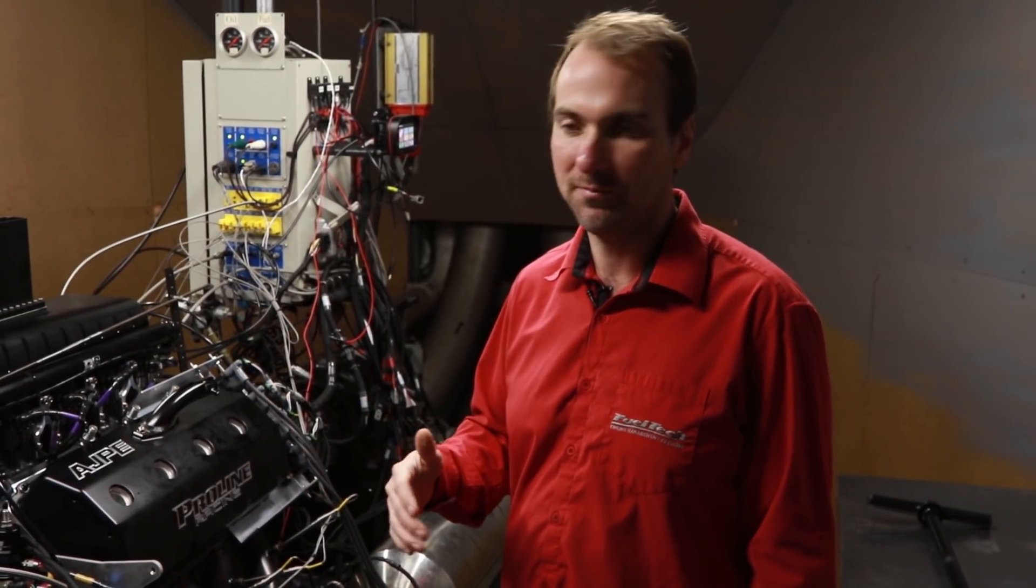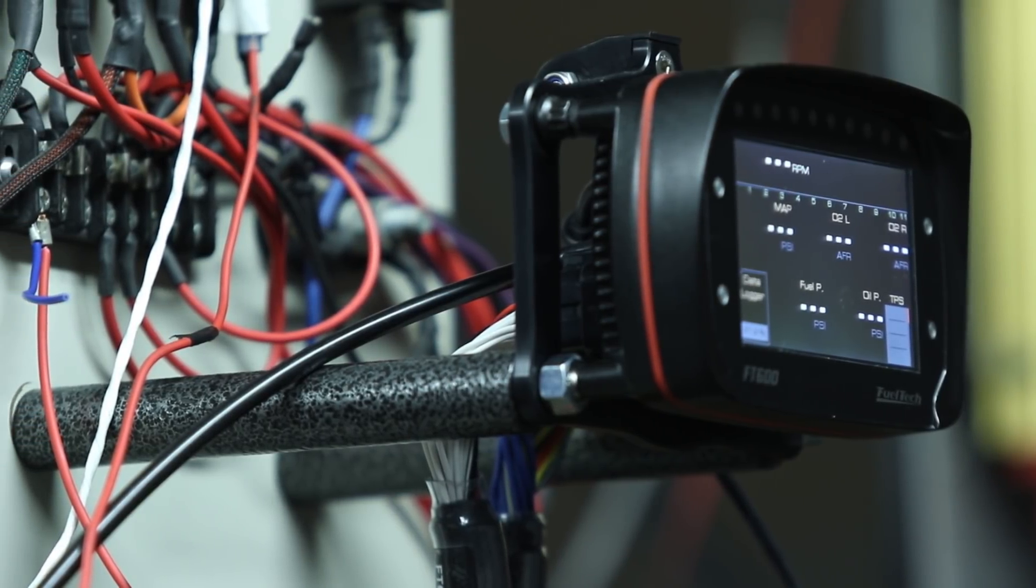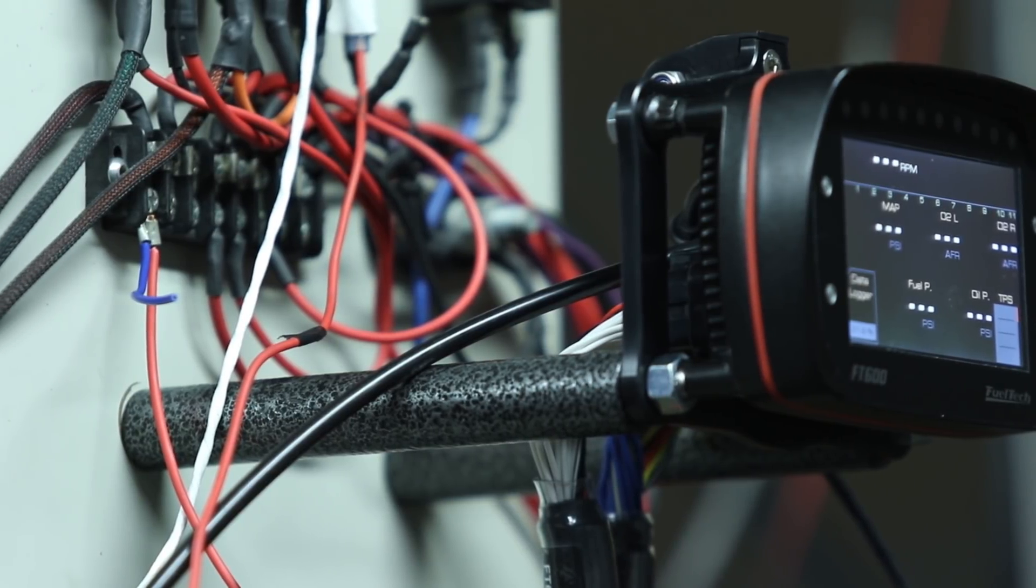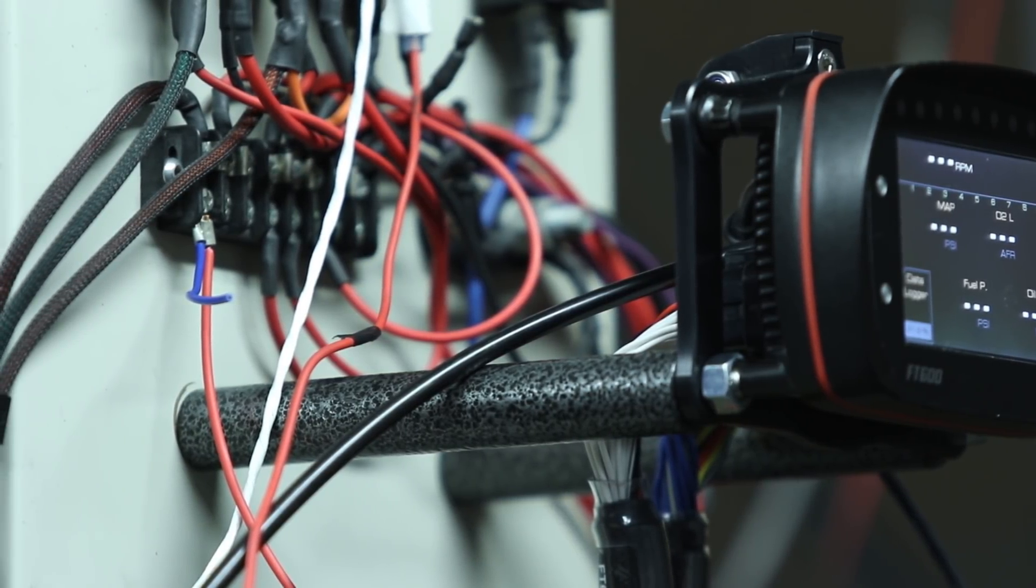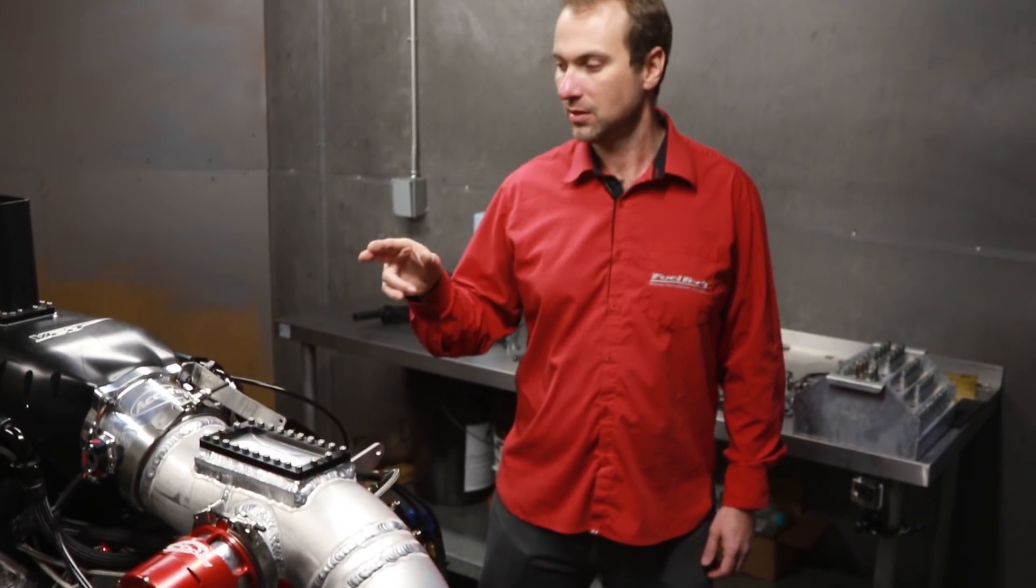Like suspension travel sensor, wheel speed, driveshaft sensor—those are possible to just wire up to the FT600. In this setup we are using the 16 injectors with individual tables for primary and secondary.